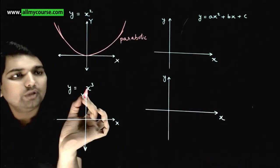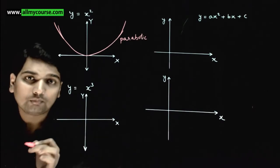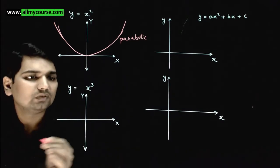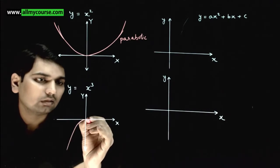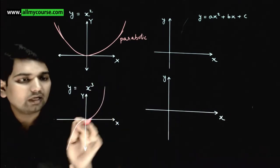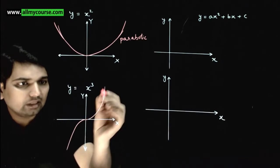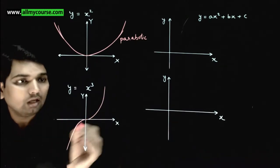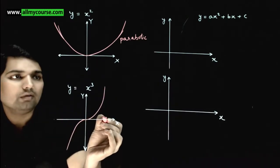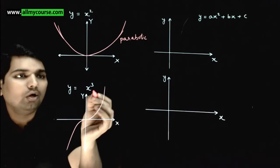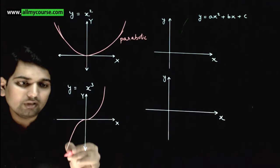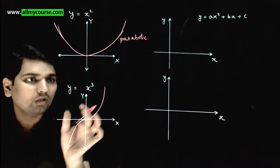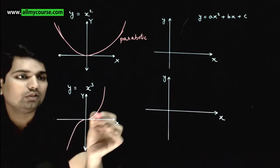If we talk about y equals x cube, how will this graph look? Its graph looks something like this. This graph is also symmetric on both sides. But at x equals plus infinity, y value will be plus infinity. And because it's a cube, at x equals minus infinity, y value will be minus infinity. The graph of y equals x cube will look something like this.